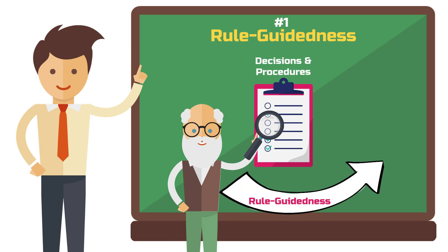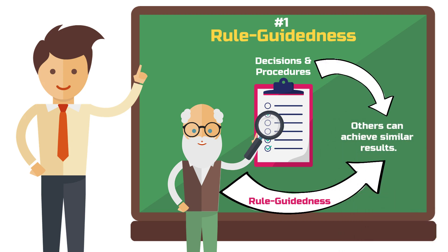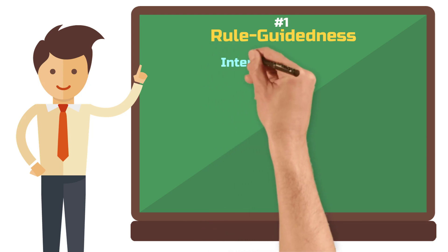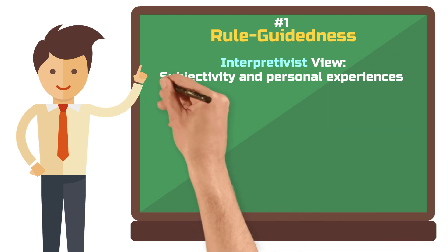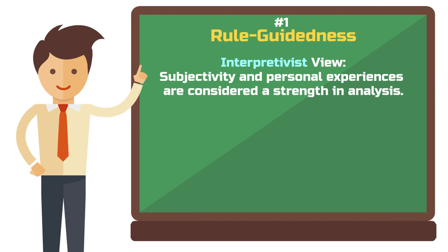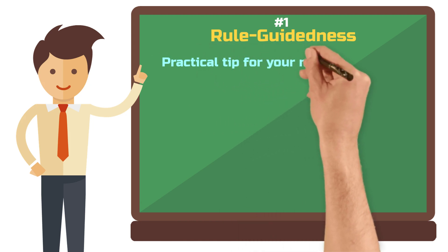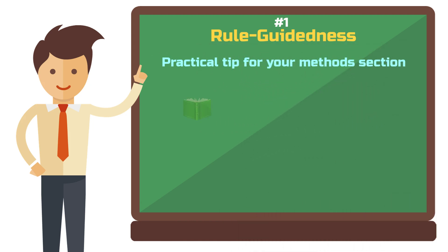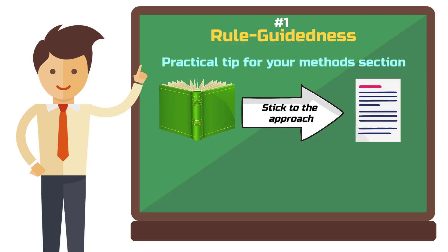By adhering to rule guidedness, you increase the likelihood that other researchers will achieve similar results if they use the same research design and rules. Qualitative researchers who follow an interpretivist philosophy would disagree, because they see the researcher's own subjectivity and experiences as a clear strength. However, rule guidedness is still an important principle, even for interpretivist qualitative studies. To implement this in your own qualitative work, I recommend following an author or a methods book closely.